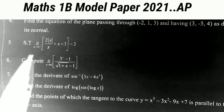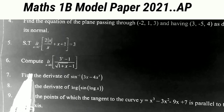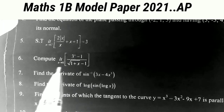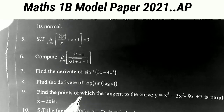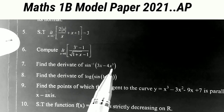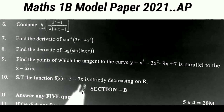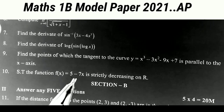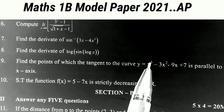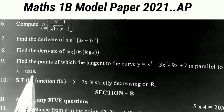The next one: show that the limit as x tends to 0 of (2 + |x|) / (x + x + 1) equals 3. The next one: compute the limit as x tends to 0 of (3^x minus 1) divided by (root(1 + x) minus 1). The next one: find the derivative of sin inverse of (3x minus 4x cubed). The next one: find the derivative of log(sin(log x)). The next one: find the points at which the tangent to the curve y = x³ - 3x² - 9x + 7 is parallel to the x-axis.